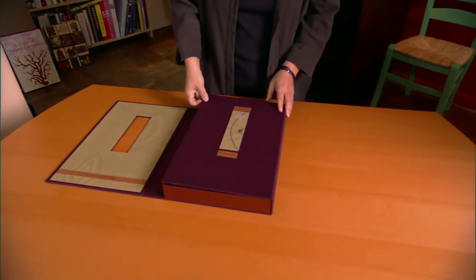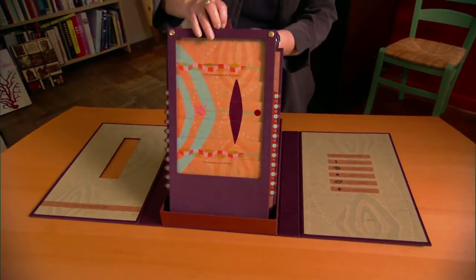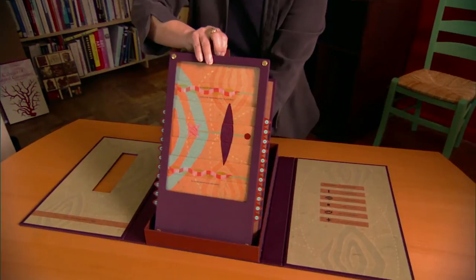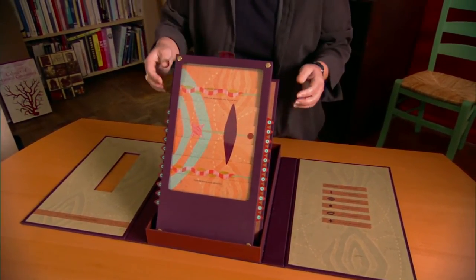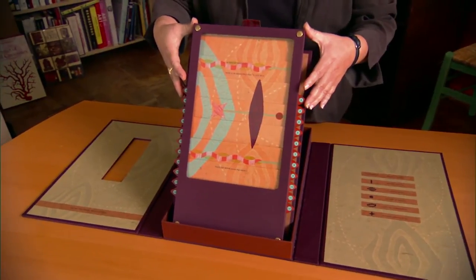This is a book called True to Life. You open the box. The book itself is this tablet with panels. And you read the text and then you slide up every panel.